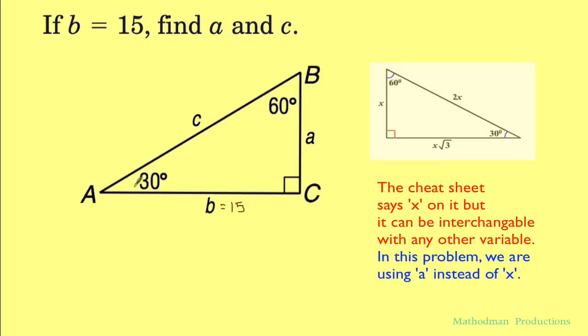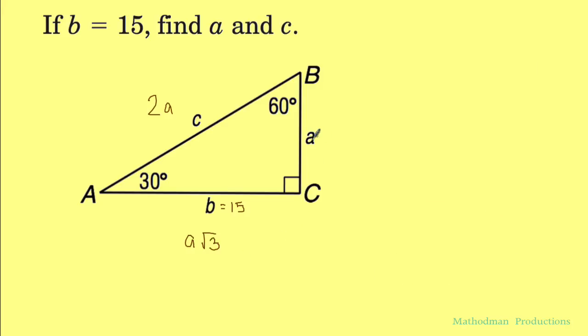If this is a, the one across 30, then we know that the hypotenuse is whatever a is times 2, and we know the one across 60 is whatever a is times the square root of 3. Nothing else is given to us. We're trying to find the value of a because once I have this, all I have to do is multiply by 2 to get the hypotenuse, and then we're already given this one across 60 as 15.